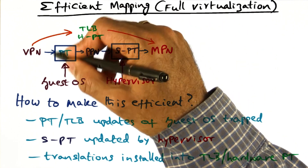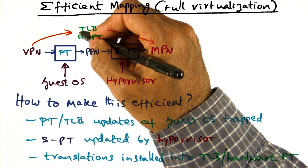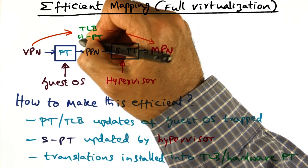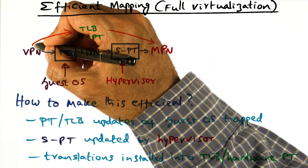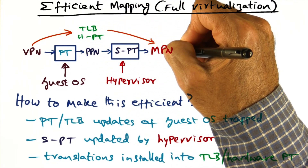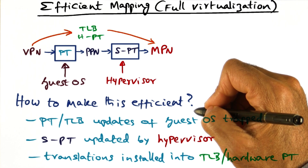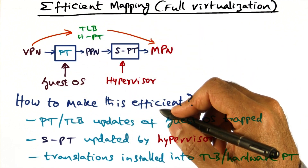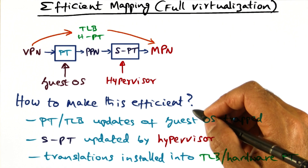We've basically bypassed the guest operating system's page table in order to do the translation, because every time a process generates a virtual address, we are not going through the guest operating system to do the translation. So long as the translation has already been installed in the TLB and the hardware page table, the hypervisor — without the intervention of the guest operating system — can translate the virtual page number of a user-level process running on top of the guest operating system directly to the machine page number using the TLB and the hardware page table. This is a trick to make address translation efficient, because it's extremely crucial that on every memory access we don't go through the guest operating system. It's just not acceptable. This trick is used in VMware's ESX server, implemented on top of Intel hardware.